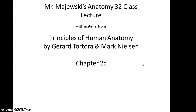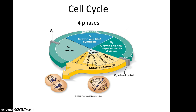Mr. Majewski's anatomy class lecture, chapter 2, part C. So we're talking about the cell, and obviously cells have a life cycle they tend to go through. It has been determined that there are four main phases to the average cell's life cycle.